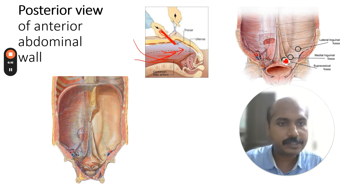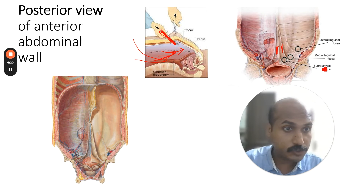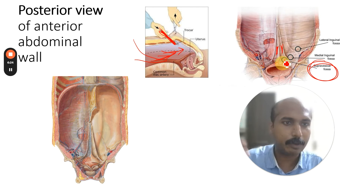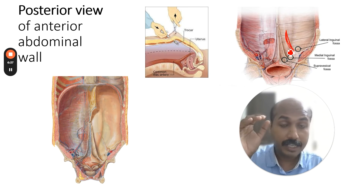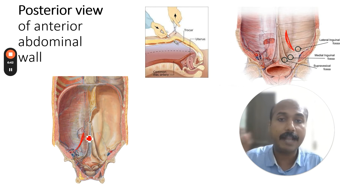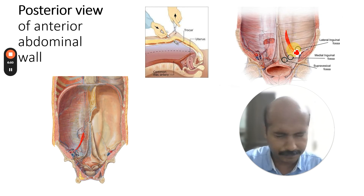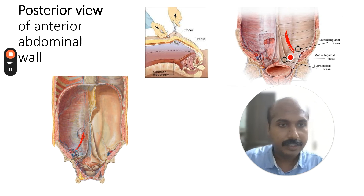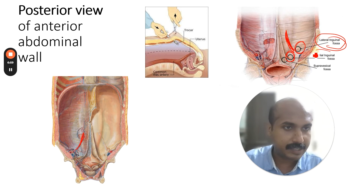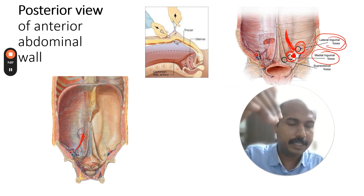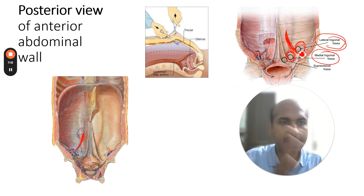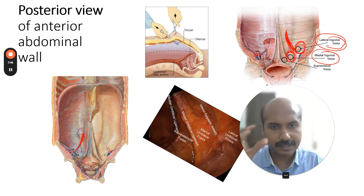The fossae associated with these folds are: between the median and medial folds is the supravesicle fossa, named because it sits just above the bladder. The lateral umbilical fold, containing the inferior epigastric vessels, divides the adjacent area into the medial inguinal fossa and the lateral inguinal fossa — two concavities on either side of the inferior epigastric vessels. These are important landmarks in inguinal hernia and inguinal canal anatomy.